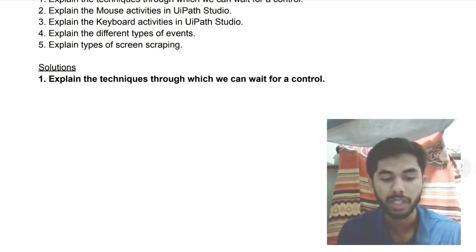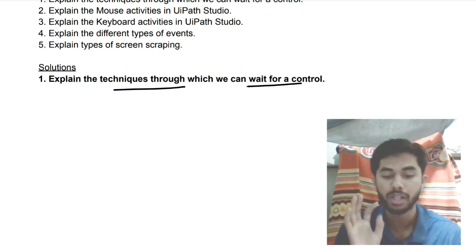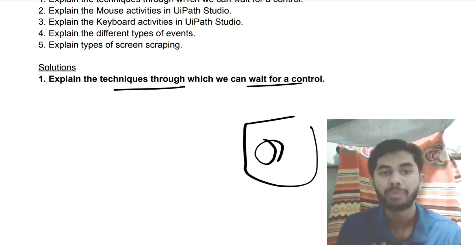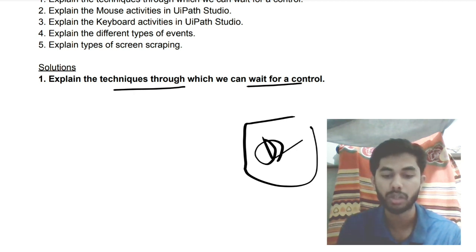The first question is: what are the techniques we can use to wait for a control? Waiting for a control means if there is something on screen that is getting changed, we have to wait until that change happens. For that, there are three techniques to keep in mind.